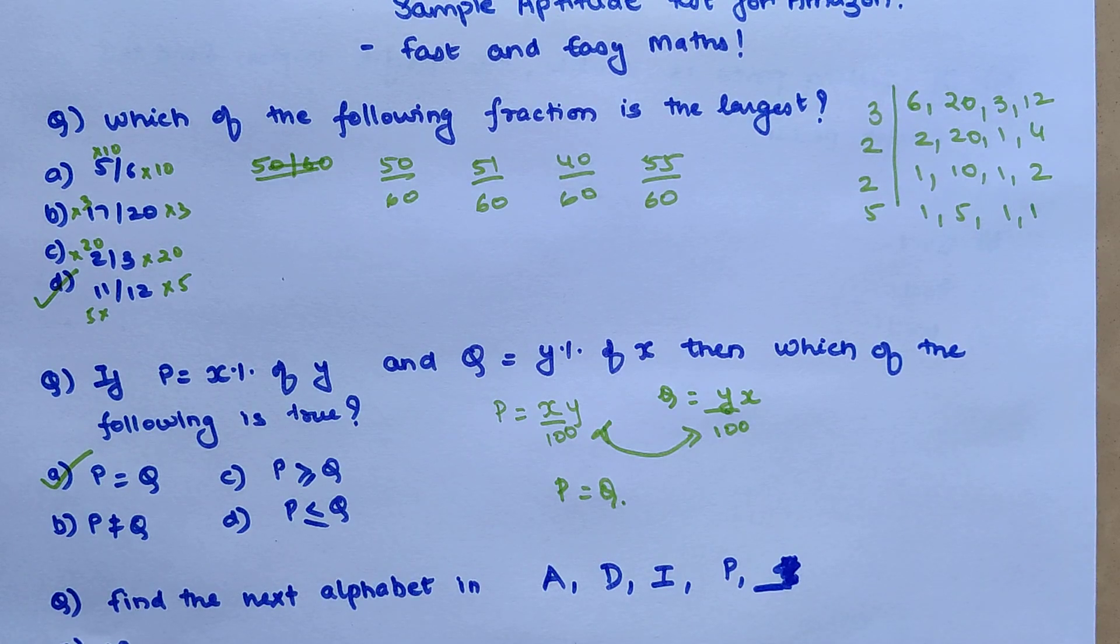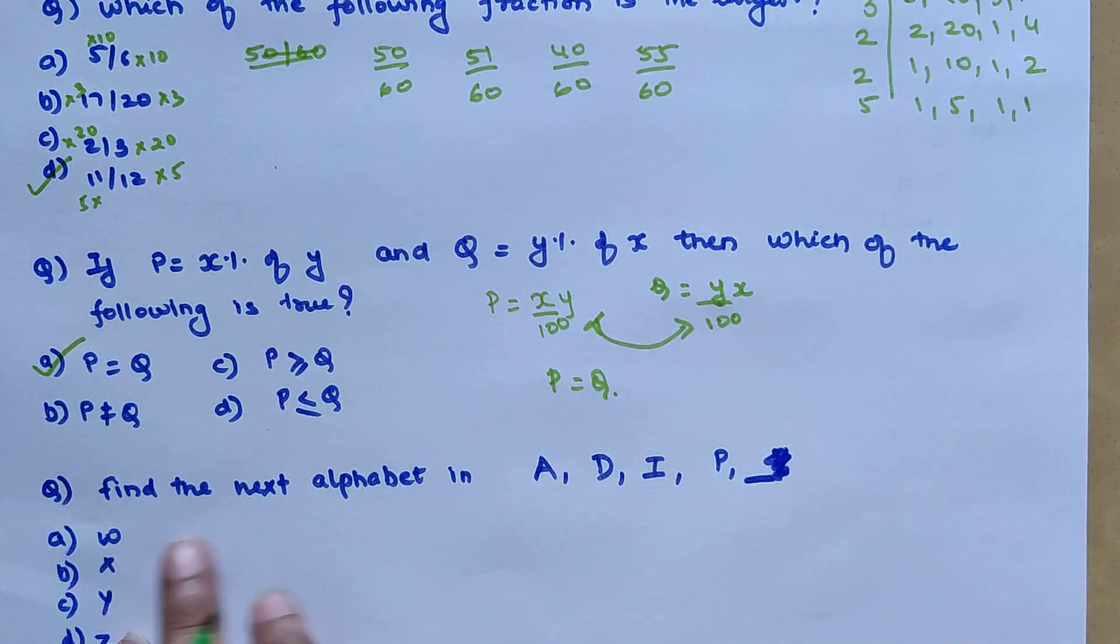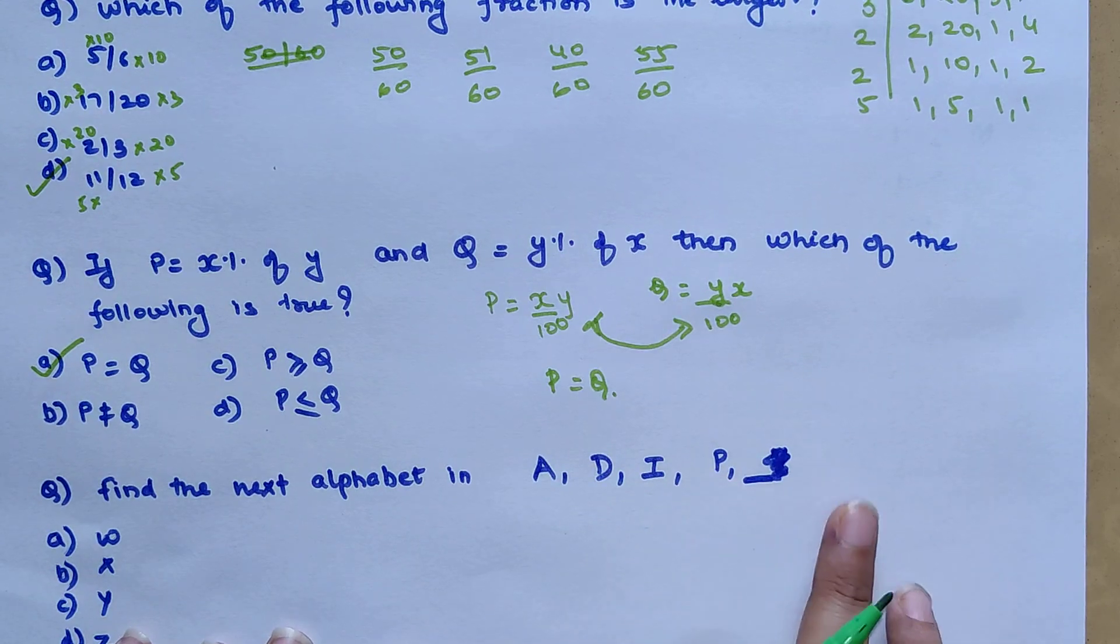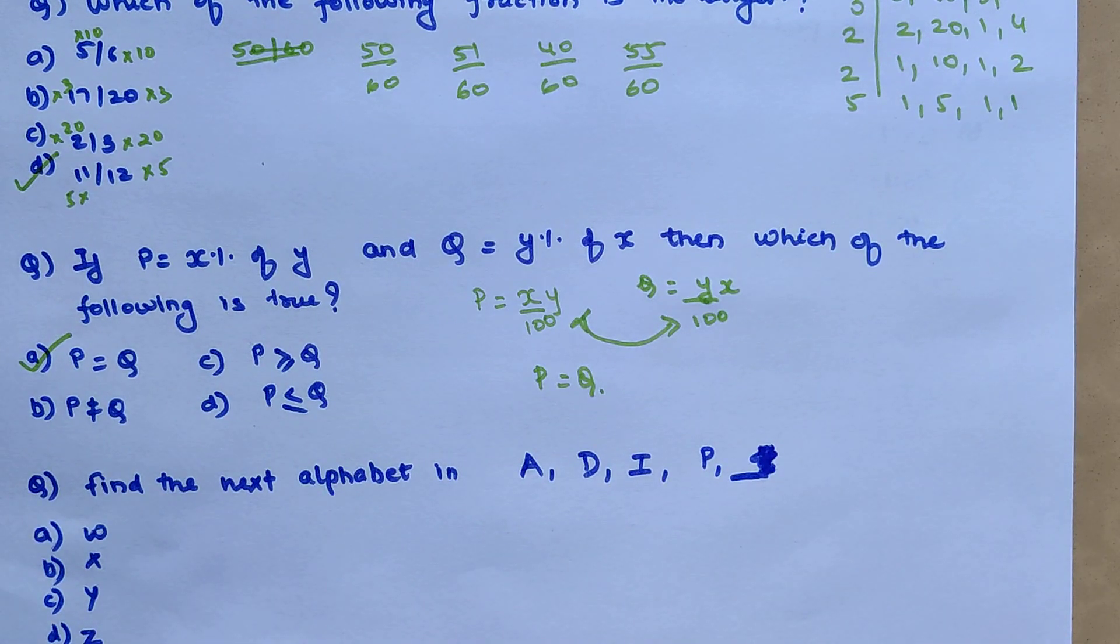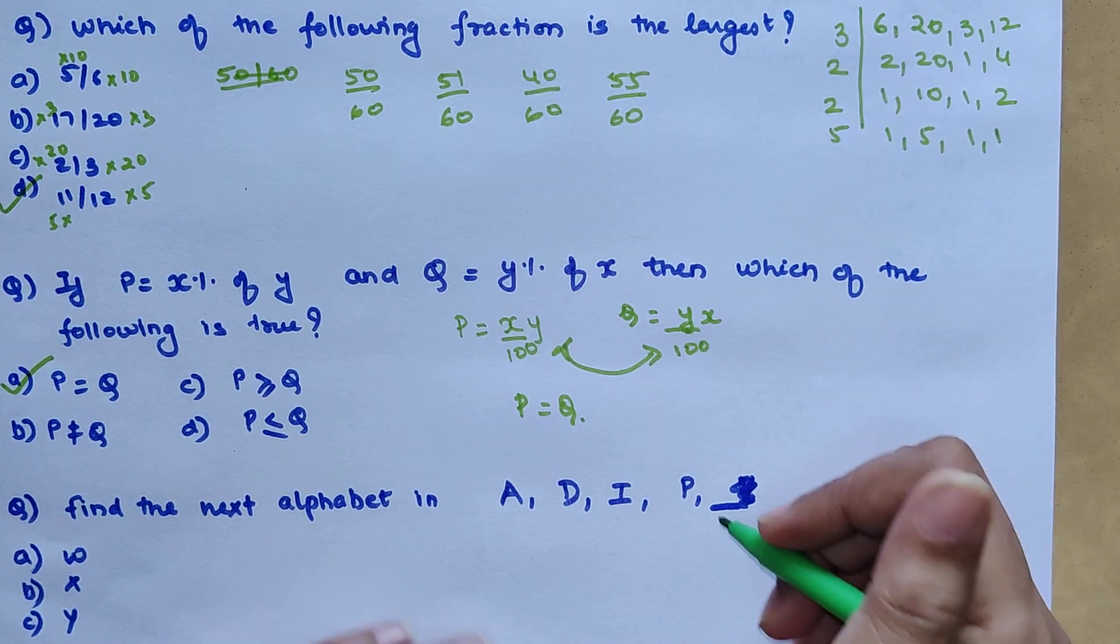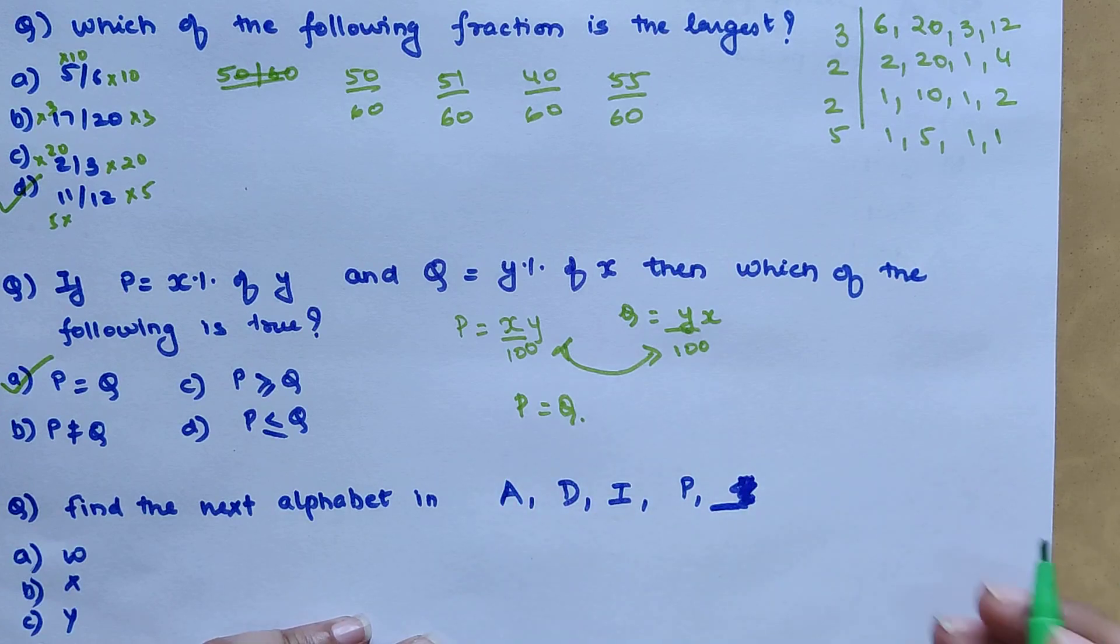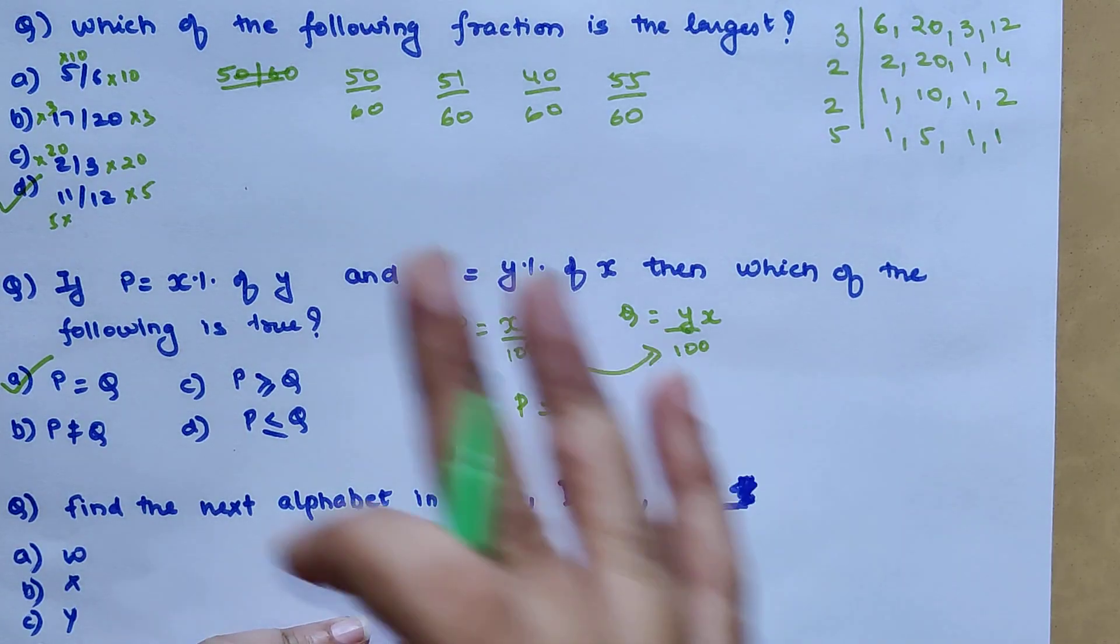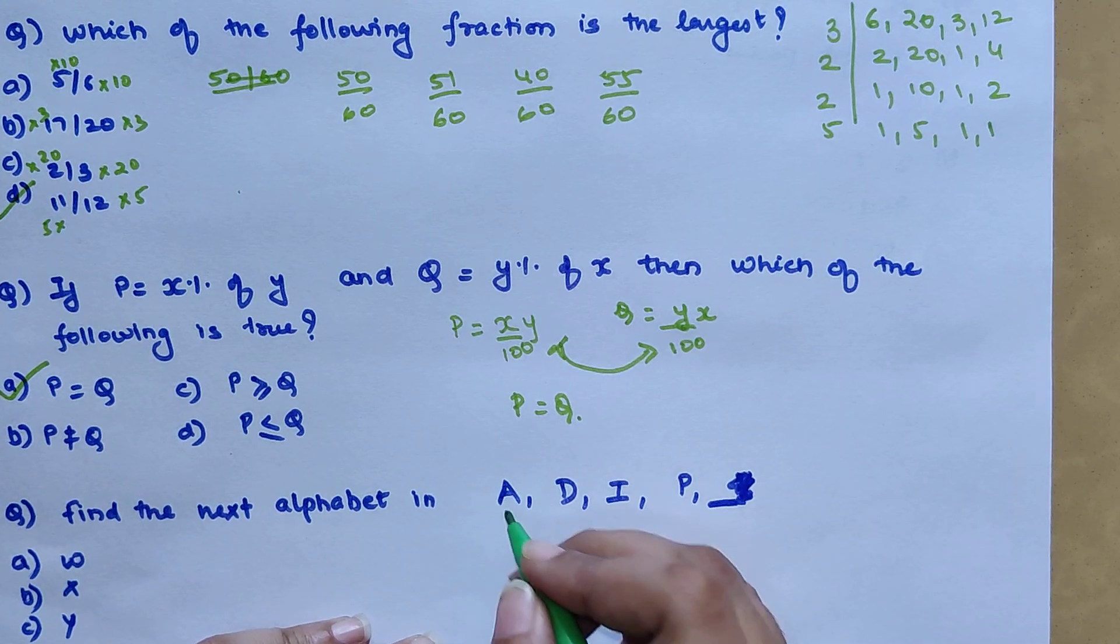Don't forget at the end of this video I'm going to put up a DIY question whose answer you can mention in the comment section. Let's begin with the next one: find the next alphabet in A, D, I, and P. There is a concept of alphanumeric series which are asked in most of these entrances. I have made a very specific dedicated video on those and the link of that will be available on top or somewhere in the description.